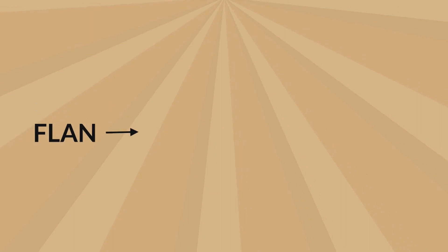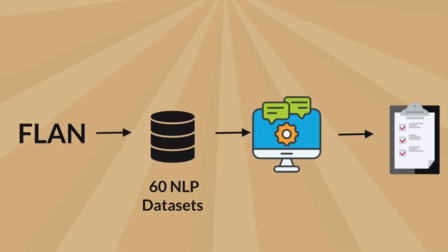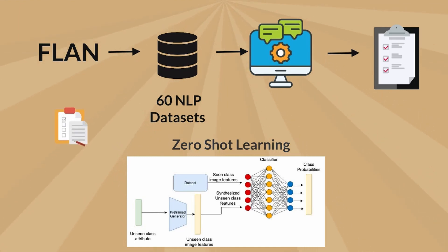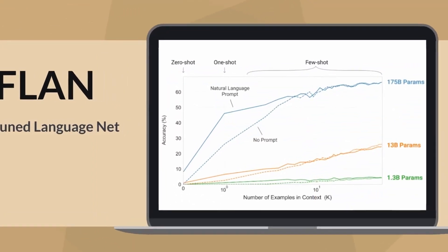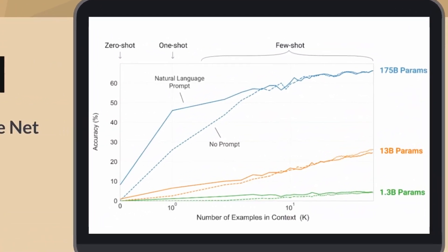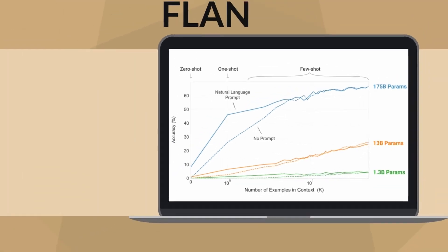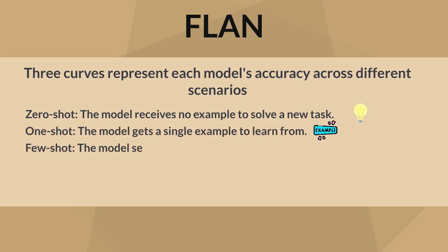Flan was trained on a diverse range of over 60 NLP datasets, each rephrased with natural language instructions to form what are essentially task descriptions. This process significantly enhanced Flan's zero-shot learning capabilities, meaning it could perform tasks it had never explicitly seen during training by following instructions given in natural language. The graph captures the stark performance contrasts between models with varying numbers of parameters: 1.3 billion, 13 billion, and 175 billion, with Flan being the 175 billion parameter model. Three curves represent each model's accuracy across different scenarios: zero-shot, where the model receives no example to solve a new task; one-shot, where the model gets a single example to learn from; and few-shot, where the model sees a few examples before attempting the task.